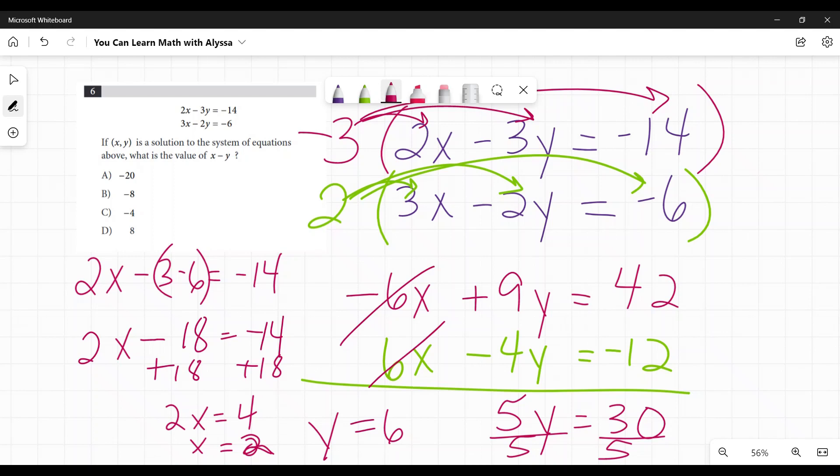Now that I know x is 2 and y is 6, I can answer their question. What is x minus y or 2 minus 6? It is negative 4 and that's my answer.